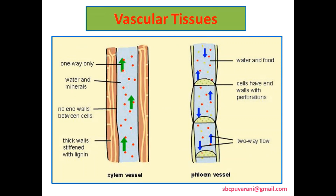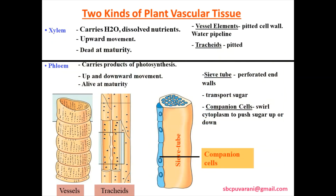Xylem vessels are one-way only because it transports the water and minerals from the root to different parts of the plant. But phloem has two-way flow because food and water flow from all parts of the plant. Xylem consists of vessel elements and xylem tracheids, whereas phloem consists of sieve tubes and companion cells. This is the types of xylem and phloem.